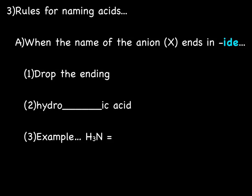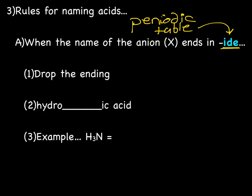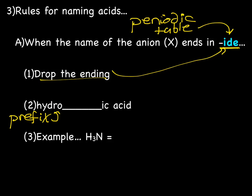Here are the rules for naming acids. The rule you're going to use is dependent on the ending of the anion. When the name of the anion ends in "-ide," we know that means the anion comes from the periodic table. We're going to drop the "-ide" ending and use the prefix "hydro" and the suffix "-ic," and put the rest of the anion name in between.